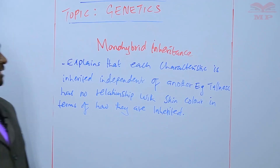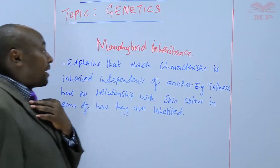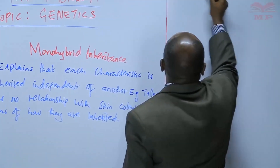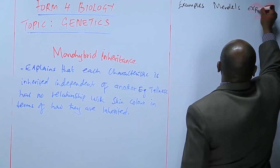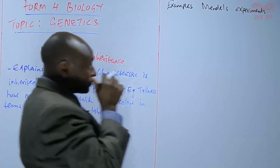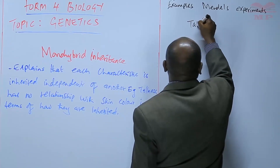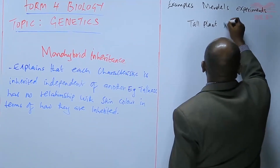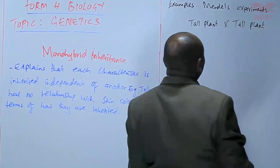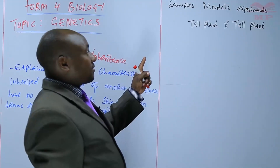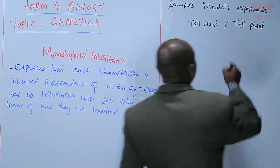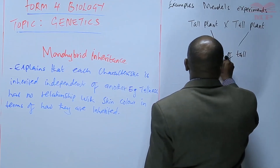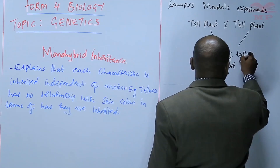Now let us look at some experiments carried out by Mendel. For example, he took some tall plants — the garden pea — and crossed them with other tall plants, obtained the seeds, and planted them, only to get a mixture of tall and short plants, which you can also call dwarf plants.